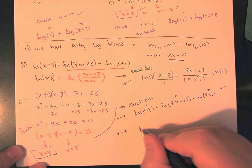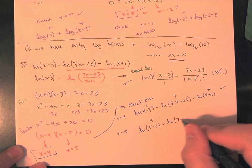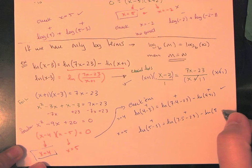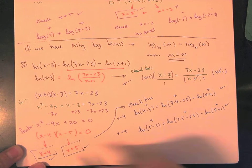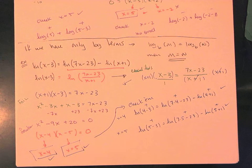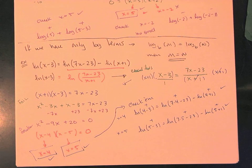Checking x equals 5: natural log of 5 minus 3 is positive; natural log of 35 minus 23 is positive; natural log of 5 plus 1 is also positive — so both solutions work. In the last example only one worked; here both do. There's no hard and fast rule about how many solutions should or shouldn't work — it depends on the original problem and what your solutions are. That's our log and exponential equations — the end of section 4.4 and the end of chapter 4.